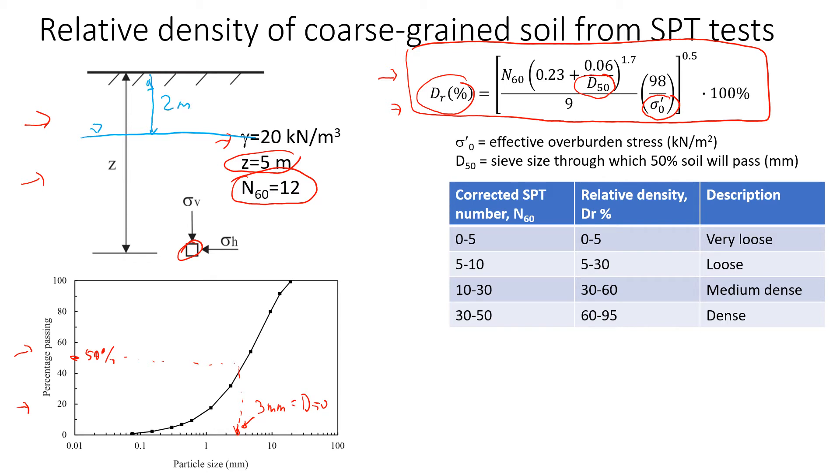So now let's find the effective stress. We'll start with the total stress. Total stress at the depth of 5 meters is 5 meters times the unit weight of soil. It will give us 100 kPa. Now we're going to find the water pressure. The water pressure is unit weight of water, 9.81, times this distance from the ground water level to the point of interest, which is 3 meters. That will give us approximately 29.4 kPa.